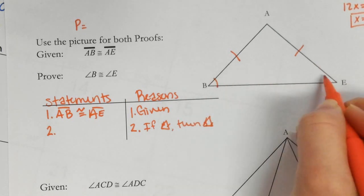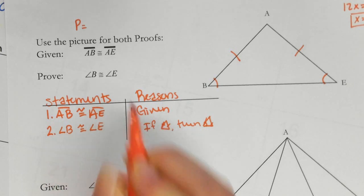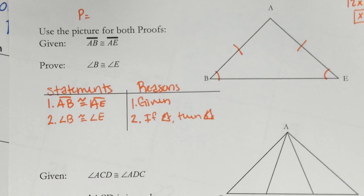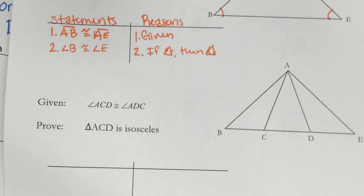So if I have two sides congruent, then two angles. Well, my two angles are going to be B and E. It's the easiest two-step proof you've done, hopefully. So that one's pretty easy. So this one is going to be similar.